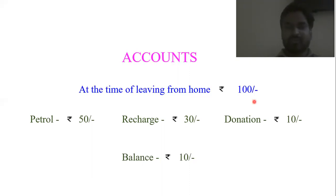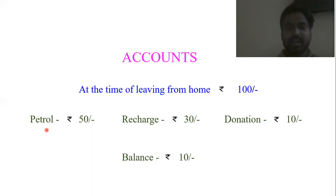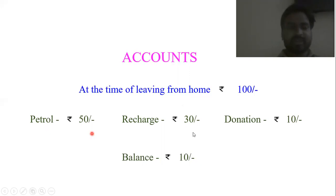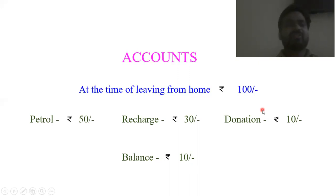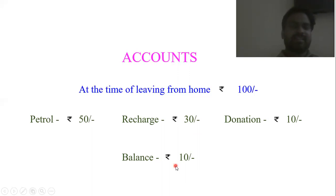So, what is the amount we have? What cash inflows — we had 100 rupees, that was our cash inflow. In the cash outflow, we can see where we are spending money and on which item. We spent on petrol: 50 rupees; on recharge: 30 rupees; on donation: 10 rupees. Then how much balance is left? 10 rupees are remaining. So this is the account — this is maintenance of accounts — it is as simple as that.